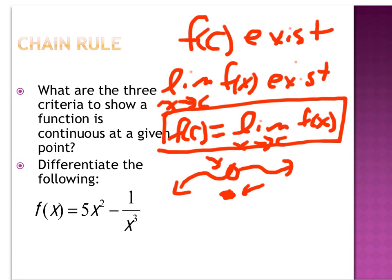The next problem is to review a little bit how to find derivatives. In this one, you're going to have to rewrite the function as something with an exponent, because the only rule we know right now is the power rule. Well, 5x squared is already written with an exponent, but this 1 over x cubed is not. Remember, a division problem can be written with a negative exponent, so the function could be rewritten this way.